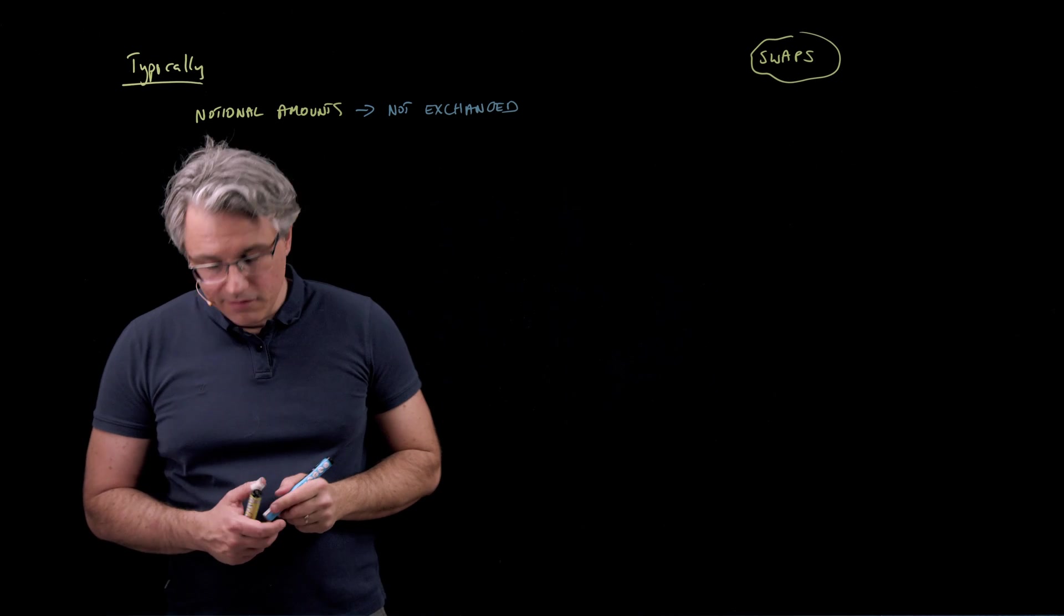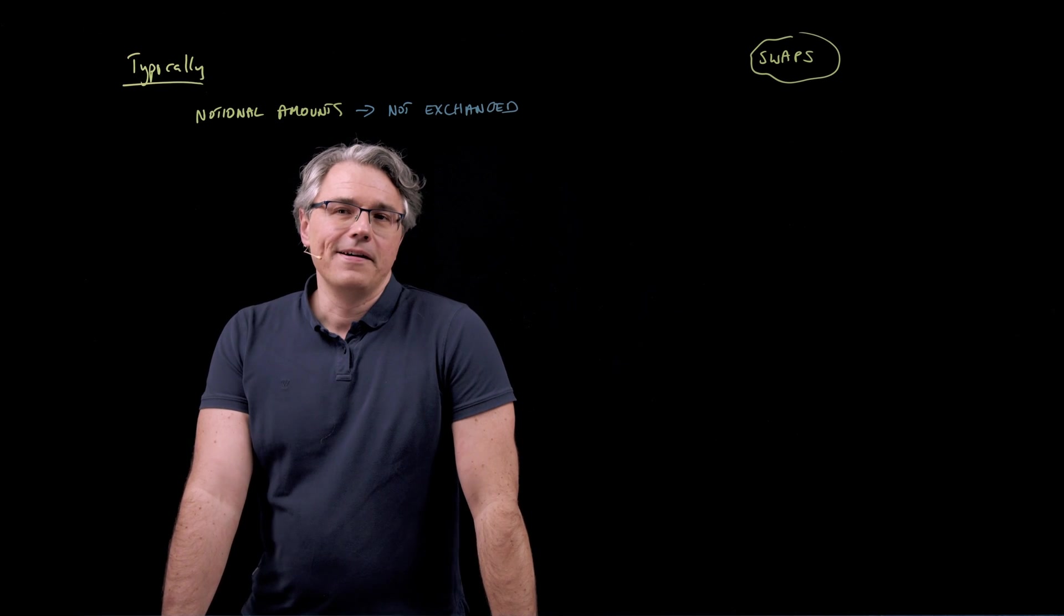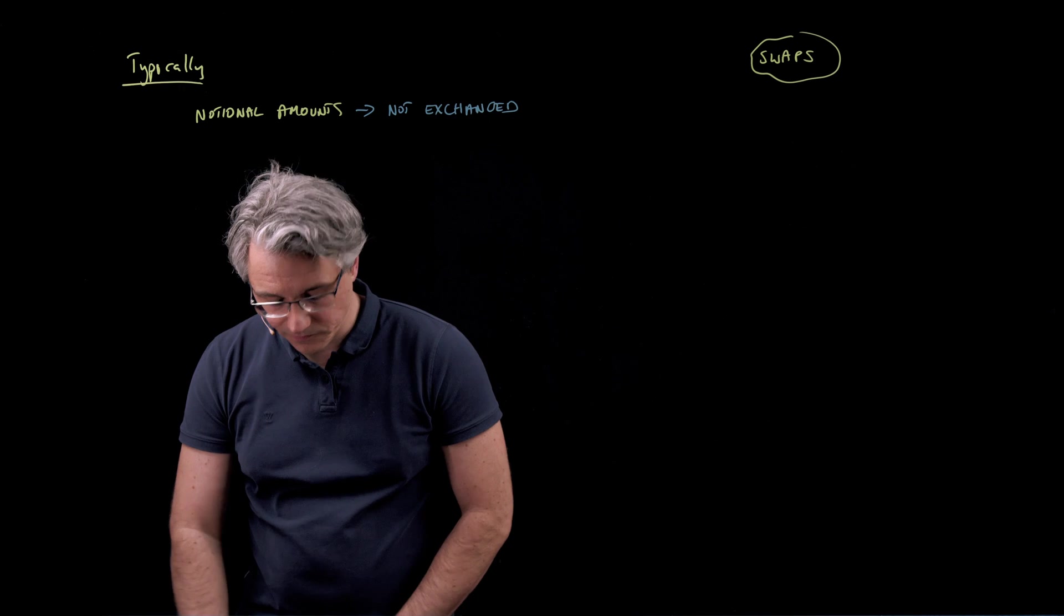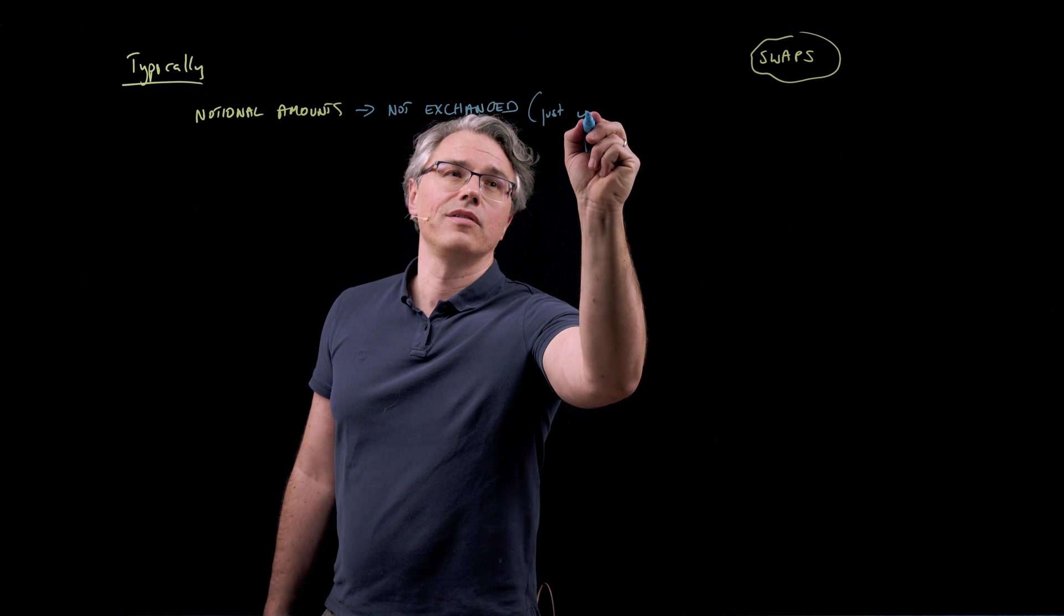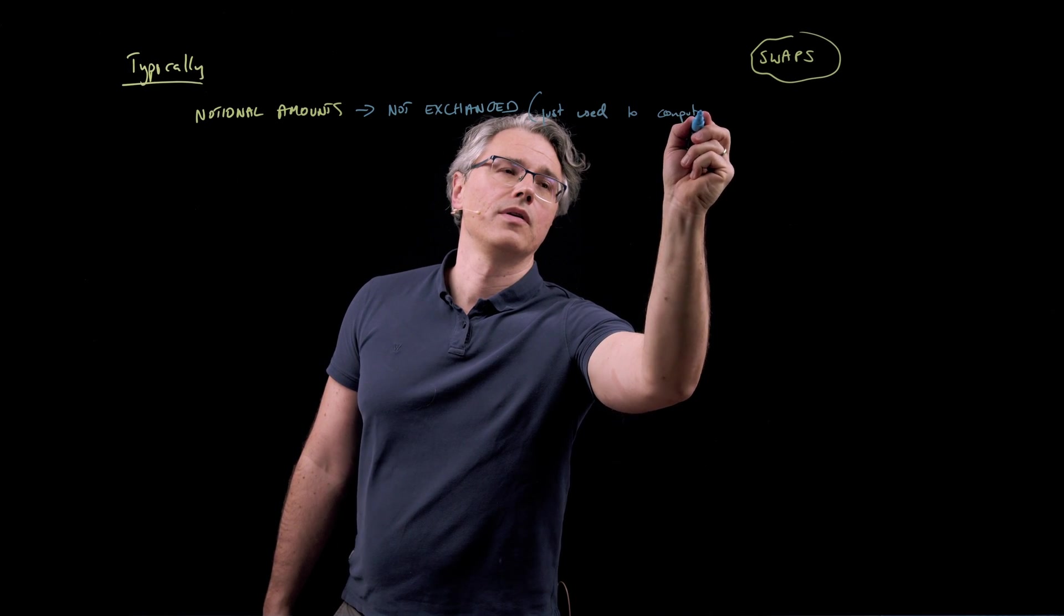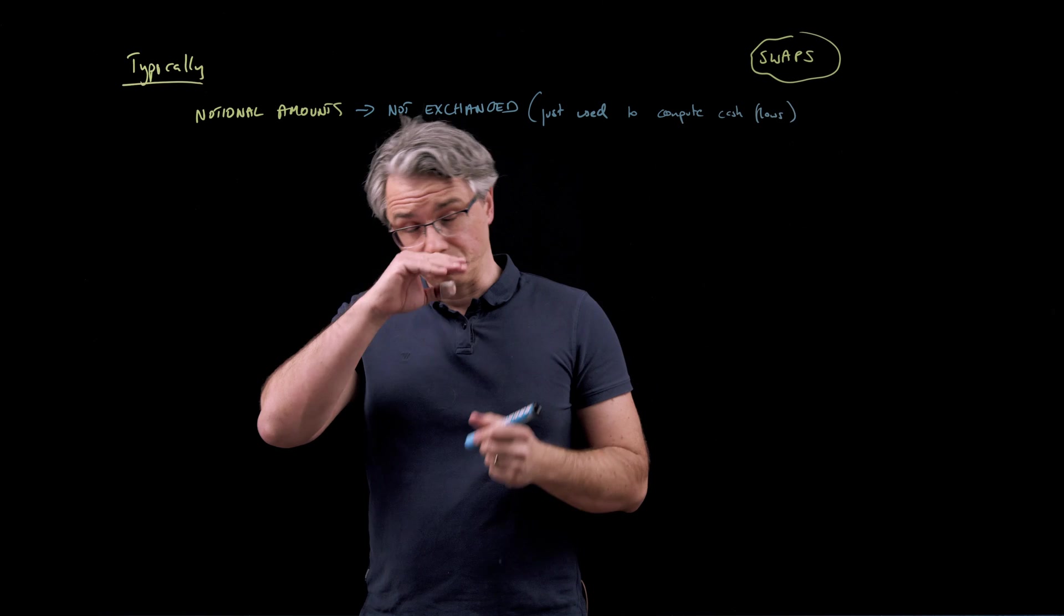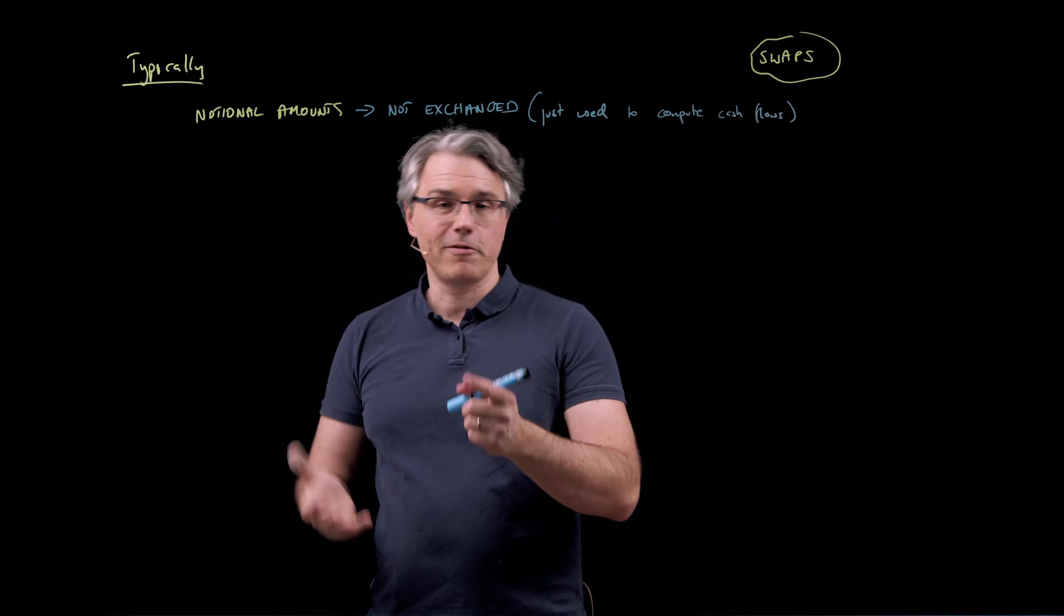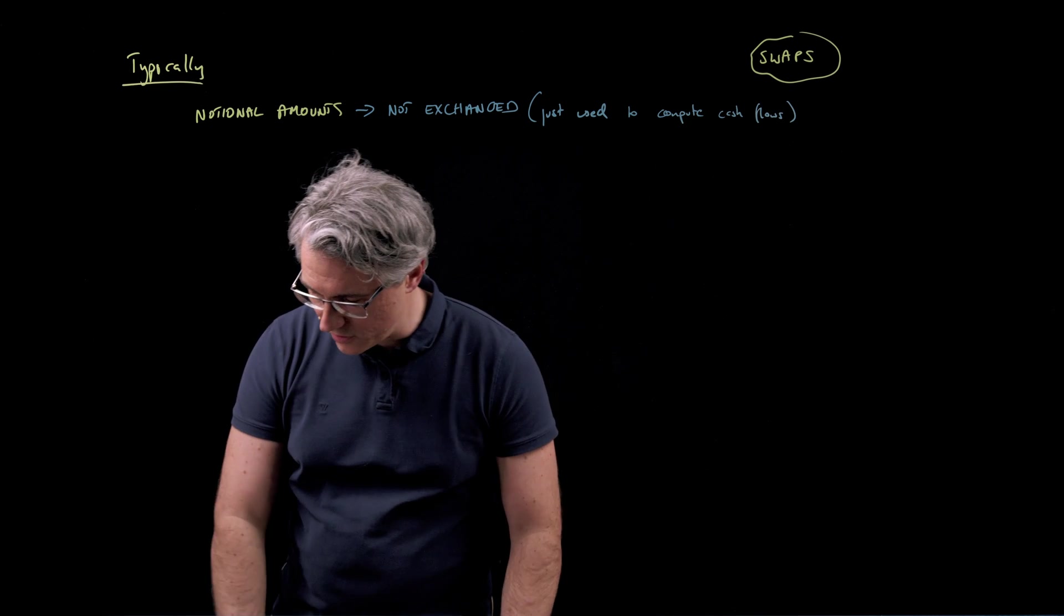So notional amounts are not exchanged at all, although exchanges do happen when you have, notional may happen when you have notional amounts expressed in different currencies, but other than that at level 1 you just assume that they are not exchanged. The only reason why we have them is they are just used to compute the cash flow, the payments, just used to compute cash flows. So like in that example, the market reference rate times notional gives you the level of one payment, the fixed rate like 2.76 times the same notional gives you the other payment and compute the net amount, but it's like a multiplier only effect.